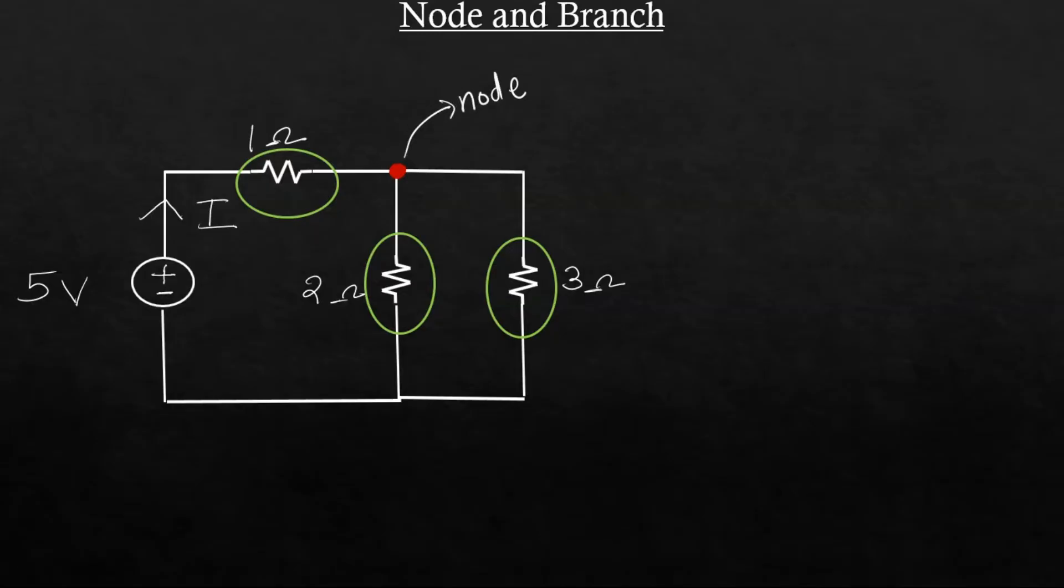Usually in some places you will find two definitions. There what they may have said is that a node is a connection of two elements and a junction is a connection of two or more elements. That way they might have defined. But in general we define a node which has more than one element connected to it.